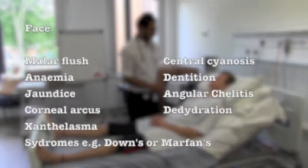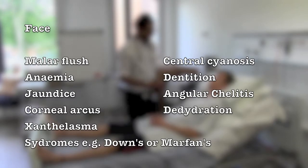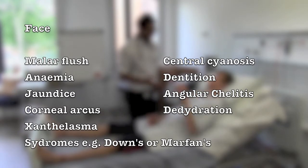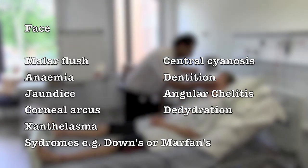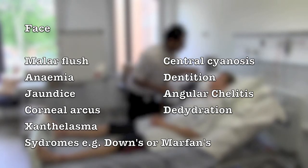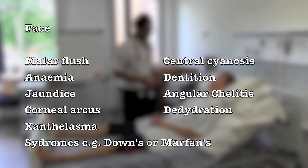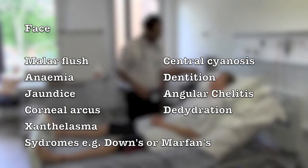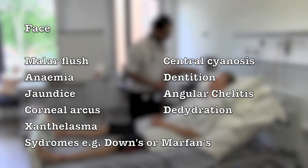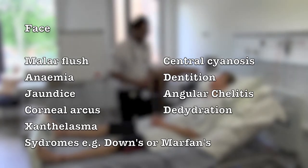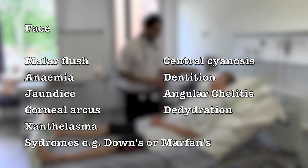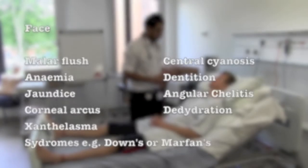In the face, you should look for any signs of malar flush, any syndromes such as Down's or Marfan's, in the eyes for anaemia, jaundice, corneal arcus, or xanthelasma, and in the mouth for any central cyanosis, dehydration, angular cheilitis, and the state of the dentition.